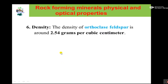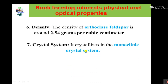The sixth physical property of orthoclase is its density. The density of orthoclase is approximately 2.54 grams per cubic centimeter. The seventh property is the crystal system. There are six crystal systems, and orthoclase, K-feldspar, belongs to the monoclinic crystal system.